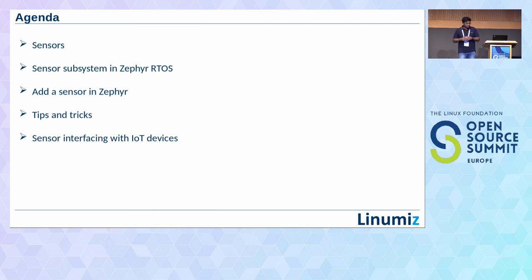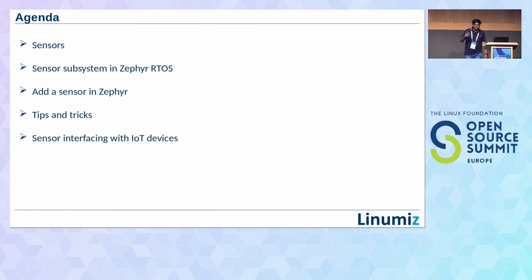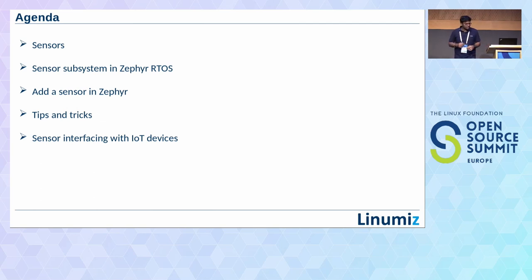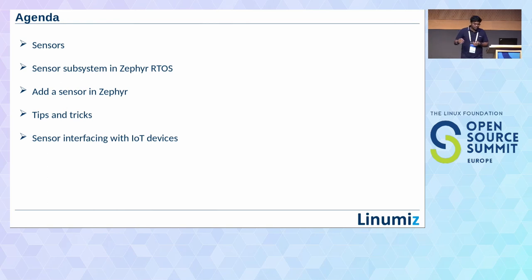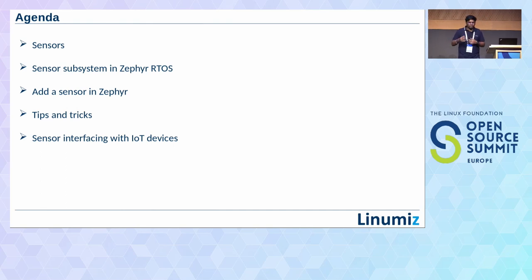Let's get started with the actual flow of our talk today. Before getting into the actual discussion about how sensor subsystems are laid out in Zephyr, we'll briefly go through what a sensor is, how it can be classified, and some basic info. Then we'll see how the sensor subsystem in Zephyr works and how it interfaces with the application. Then we'll see how to add a new sensor in Zephyr — useful if you have a sensor and would like to add support in Zephyr. Finally, we'll cover key insights and tips and tricks for sensor and Zephyr application and driver development.